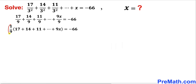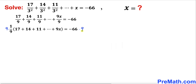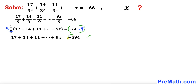So we factor out 1 over 9 outside, and we are left with 17 plus 14 plus 11, all the way to 9x. Now let's remove this fraction 1 over 9 by multiplying both sides by 9. The 9s cancel out, and negative 66 times 9 gives us negative 594 on the right hand side.